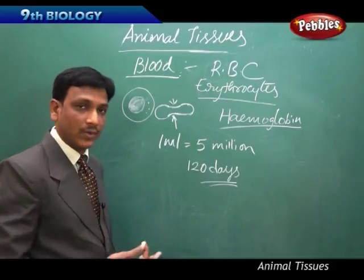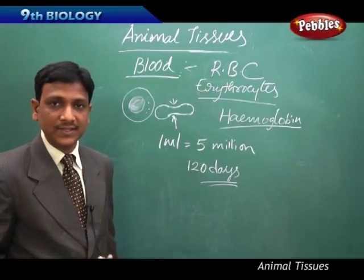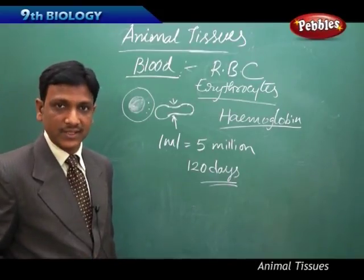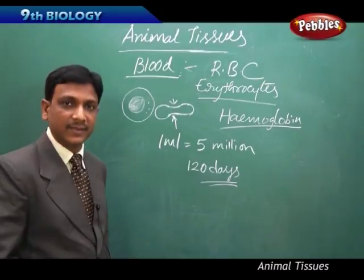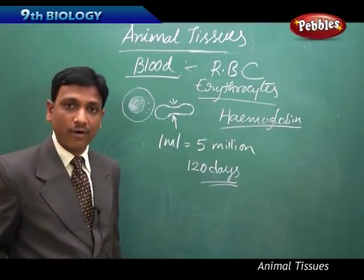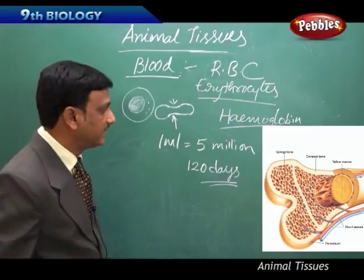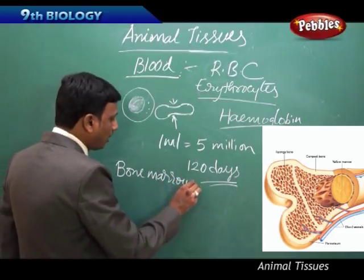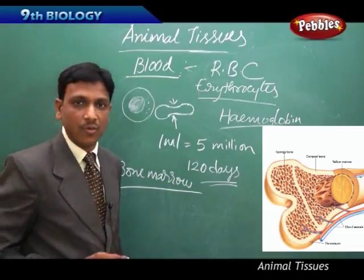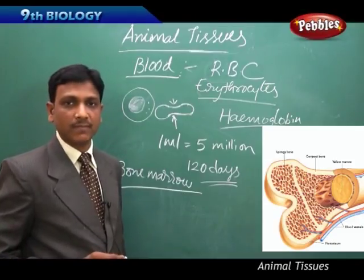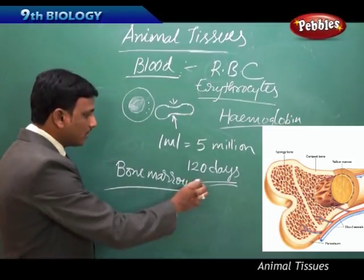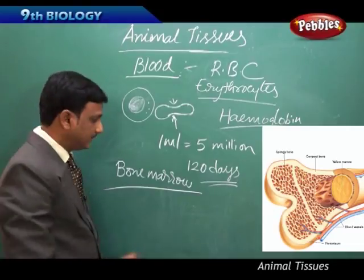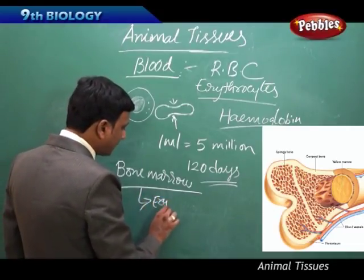New RBCs are formed in the bone marrow of long bones, such as the thigh bone (femur). The formation of RBC is called erythropoiesis. For erythropoiesis, a hormone called erythropoietin — produced in the kidneys — is required. Once RBCs are formed in the bone marrow, they are sent into the blood circulatory system and live for 120 days, transporting oxygen from the respiratory organs to different parts of the body and carrying carbon dioxide for excretion.